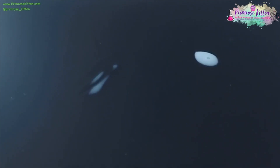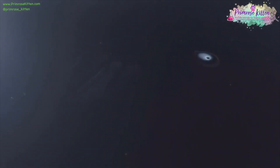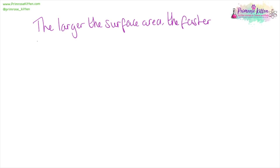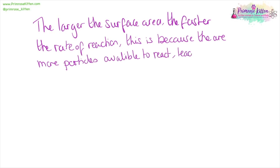Here I have two identically sized blobs of glue — one I've spread out, and one I've left as a blob. You can see the one that's spread out, with the larger surface area, dries much, much faster. We can say that the larger the surface area, the faster the rate of reaction, because there are more particles available to react, leading to more successful collisions.